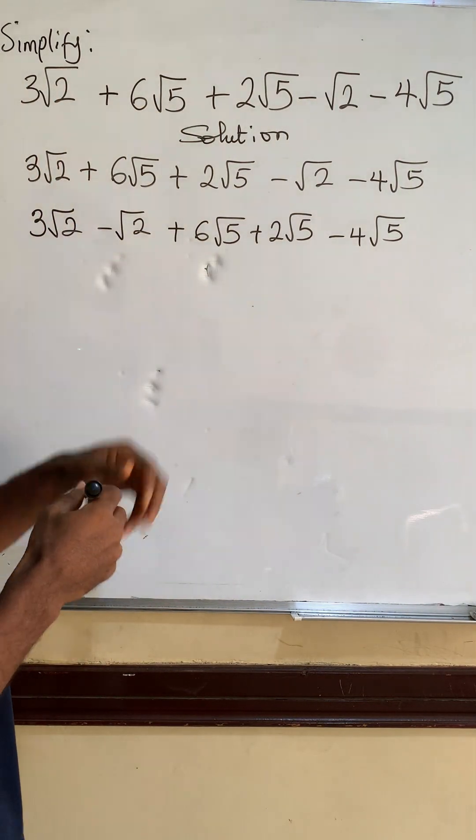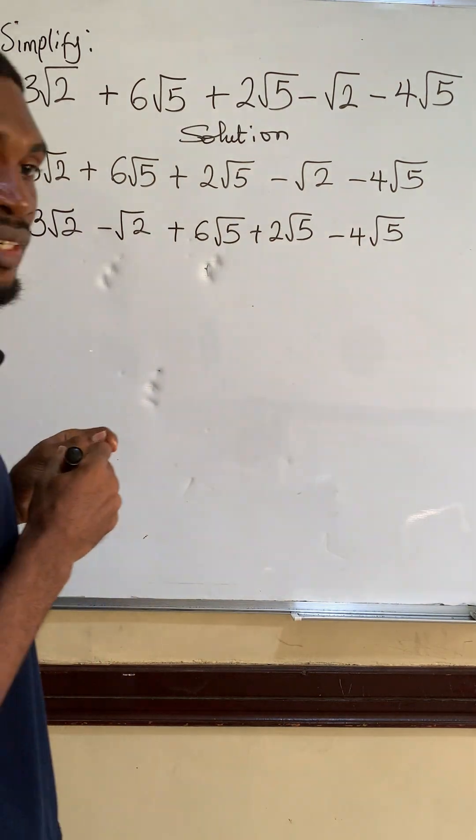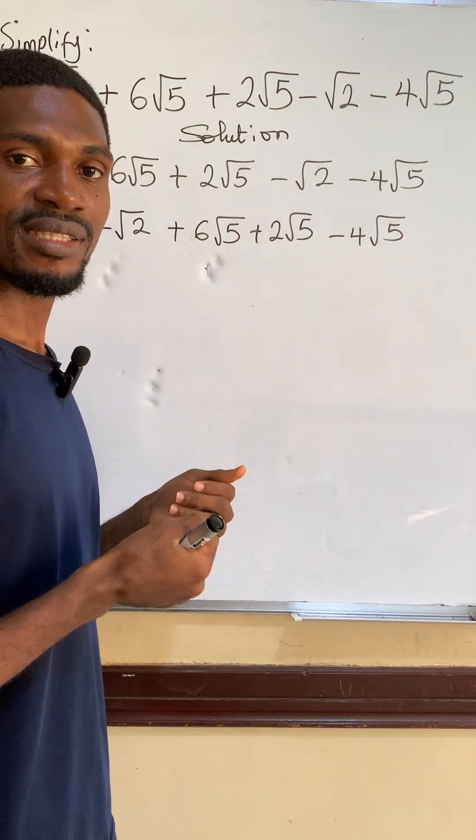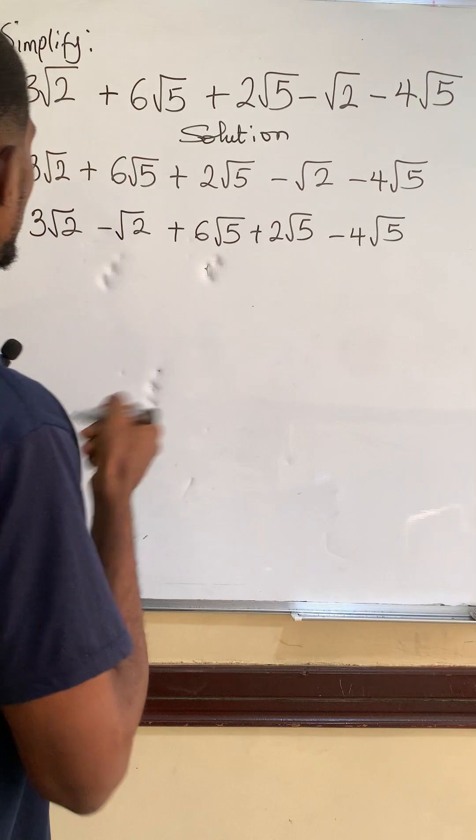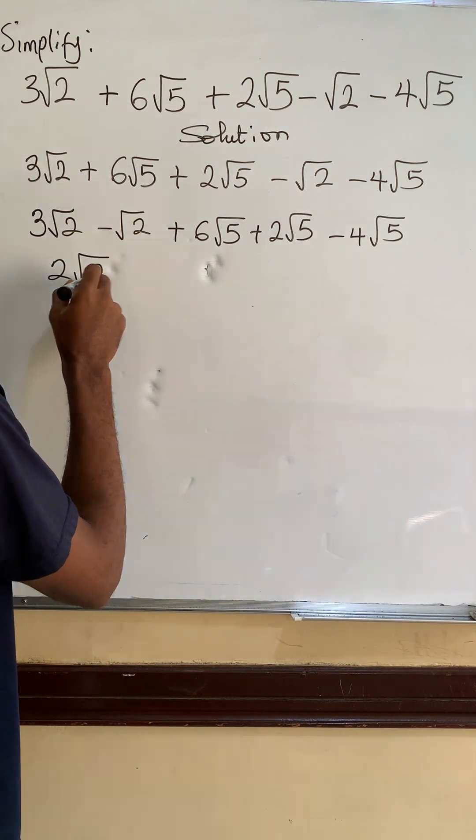This is 3 root 2 minus root 2, which is simply like just saying 3x minus x, which is 2 root 2.